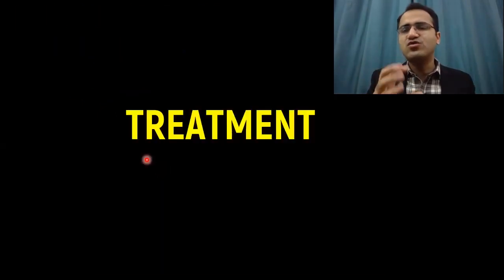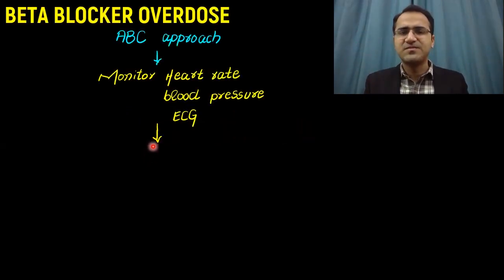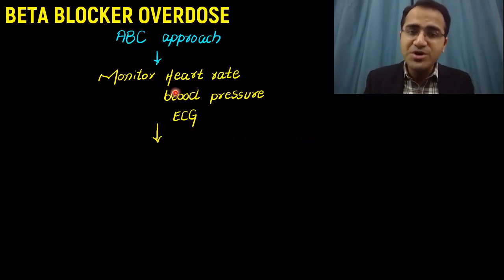Treatment of beta blocker overdose revolves around protecting the heart, preventing cardiac arrest. You have an ABC approach: you protect the airway, breathing, circulation. You monitor heart rate, blood pressure, and you have continuous ECG monitoring.